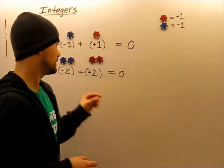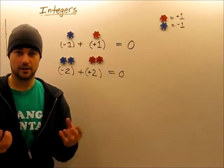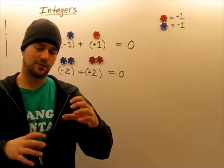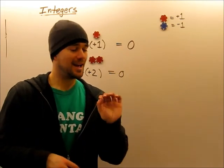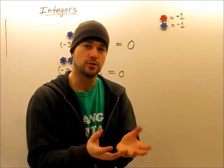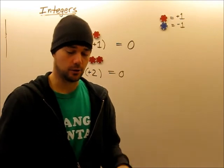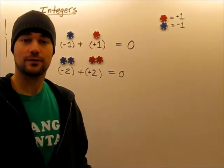Similarly, if we had counters that look like this and said combine them together, we would say we could write it mathematically like negative two combined with positive two equals zero. And why is that, of course? Because this one cancels out with this one, and this one cancels out with this one.